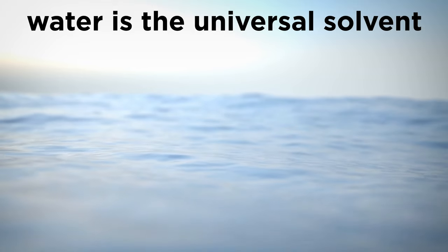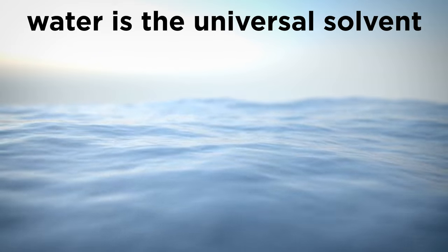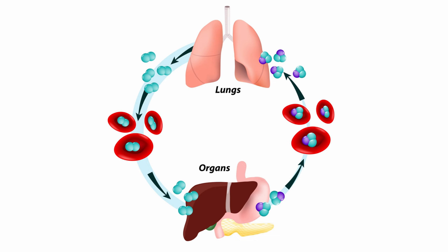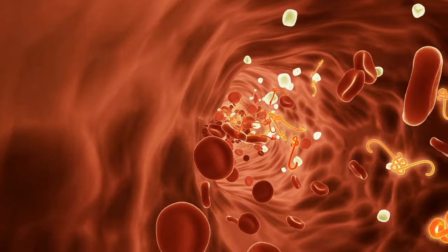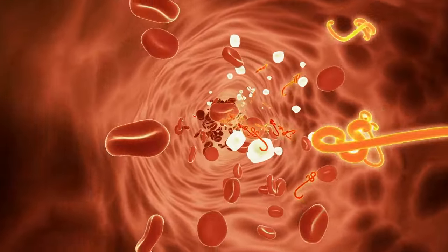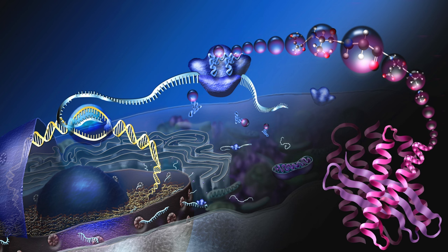Given that water can dissolve a wide variety of molecules, it is known as the universal solvent. It's this ability that makes water such an invaluable life-sustaining force. On a biological level, water's role as a solvent helps cells transport and use substances like oxygen or nutrients. Water-based solutions like blood help carry molecules to necessary locations, like oxygen for respiration. Water also allows everything inside cells to have the right shape at the molecular level. As shape is critical for biochemical processes, this is also one of water's most important roles.